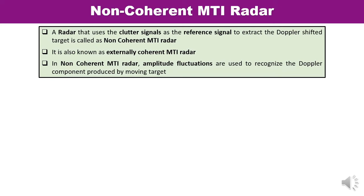Now you will be able to differentiate between coherent and non-coherent MTI. A radar which uses the clutter signal as a reference signal to extract the Doppler shifted target is known as a non-coherent MTI radar. In non-coherent MTI radar, amplitude fluctuations are used to recognize the Doppler component produced by the moving target. That is why it is also known as an externally coherent MTI radar.